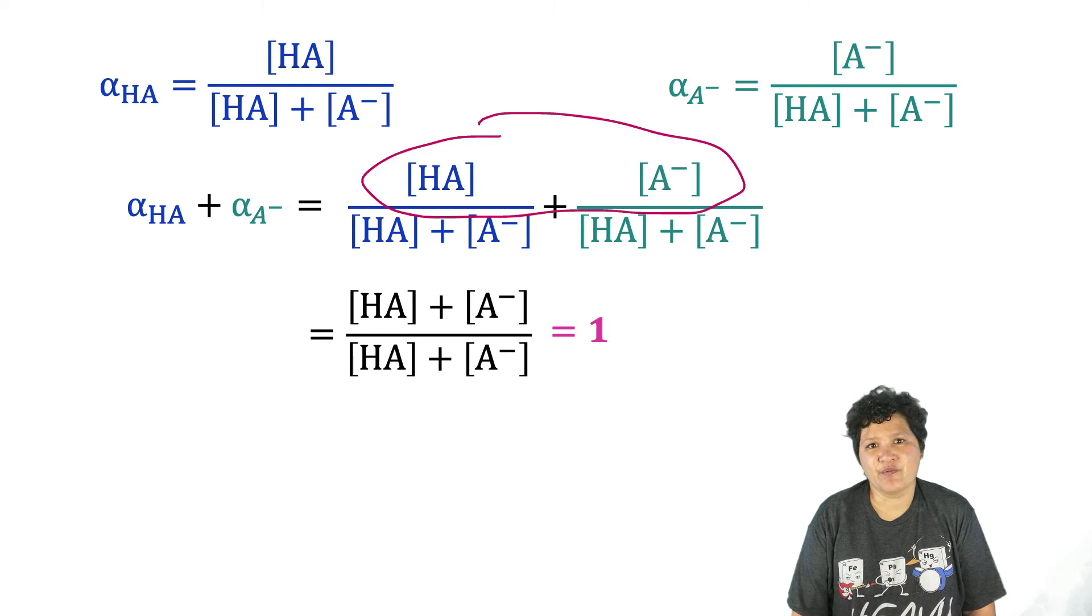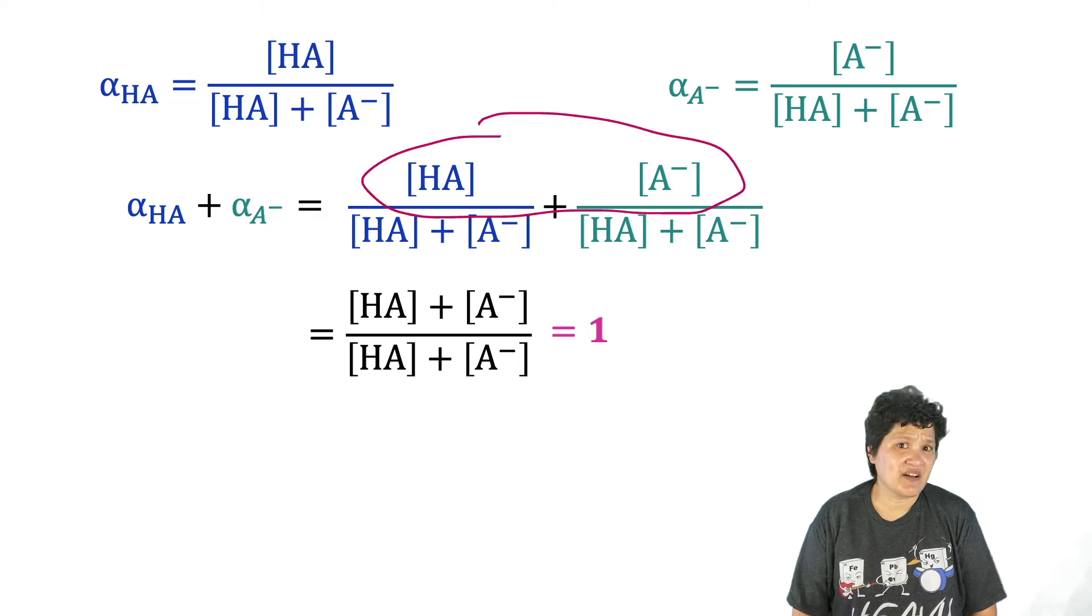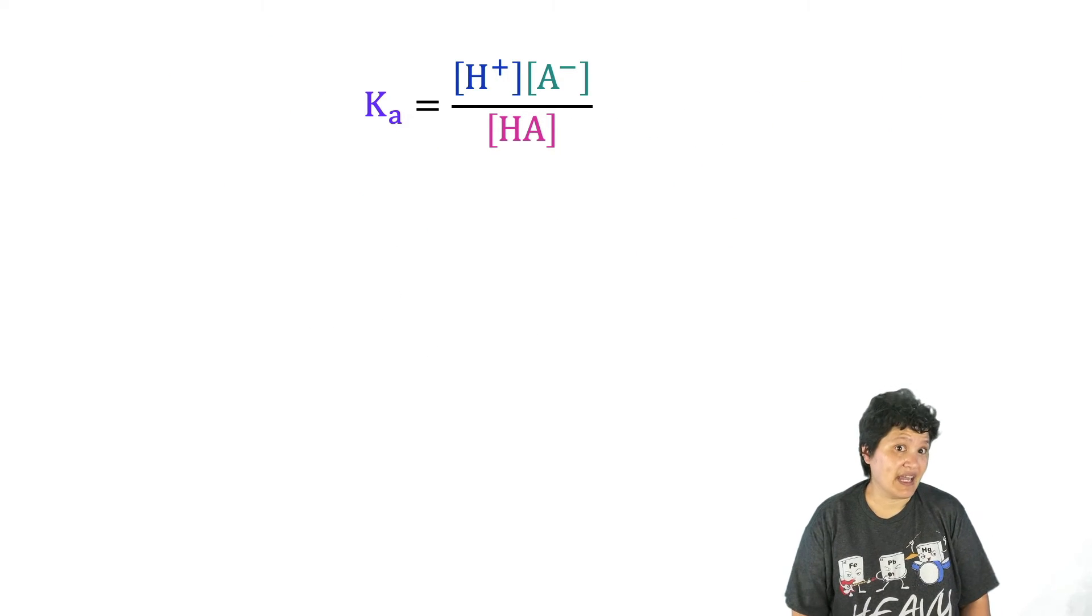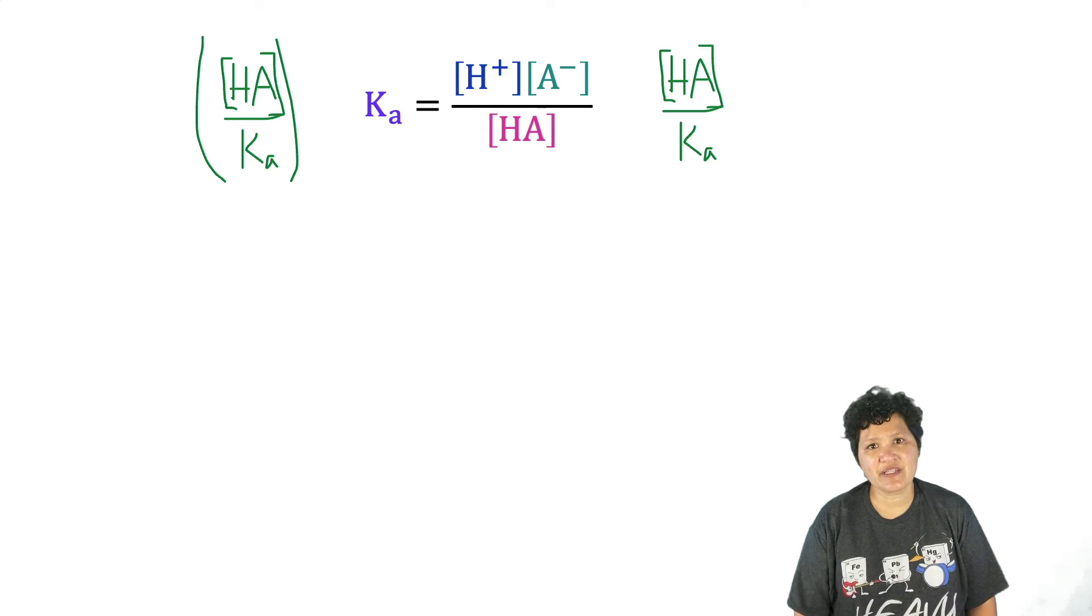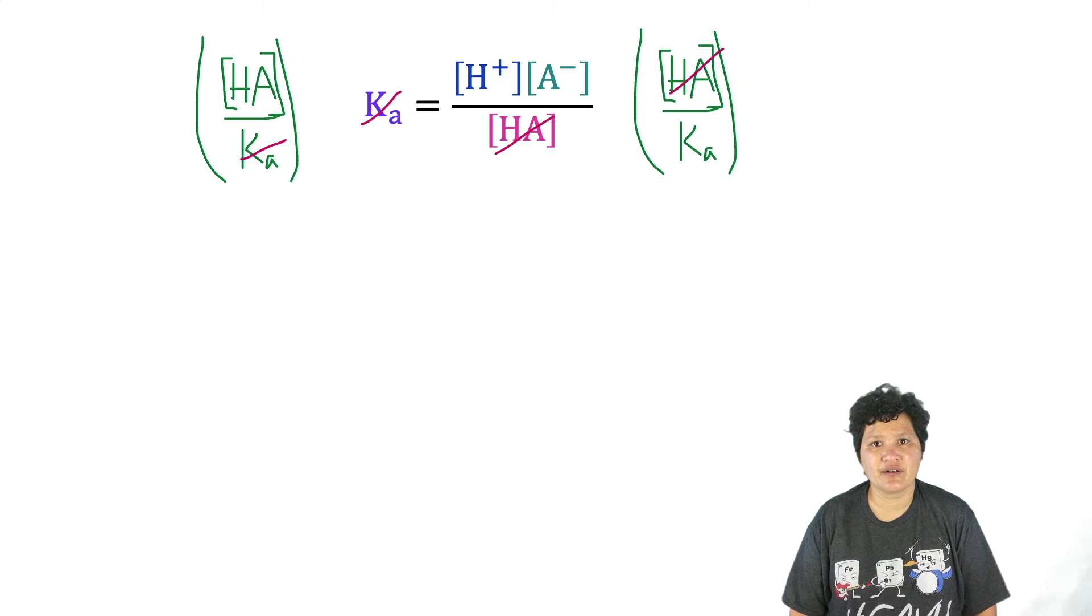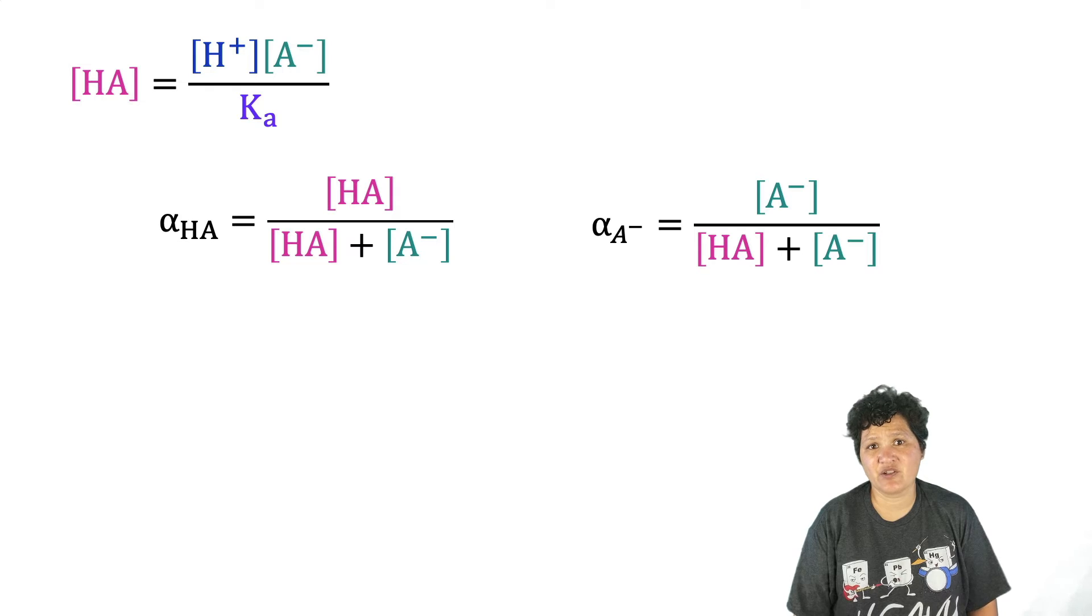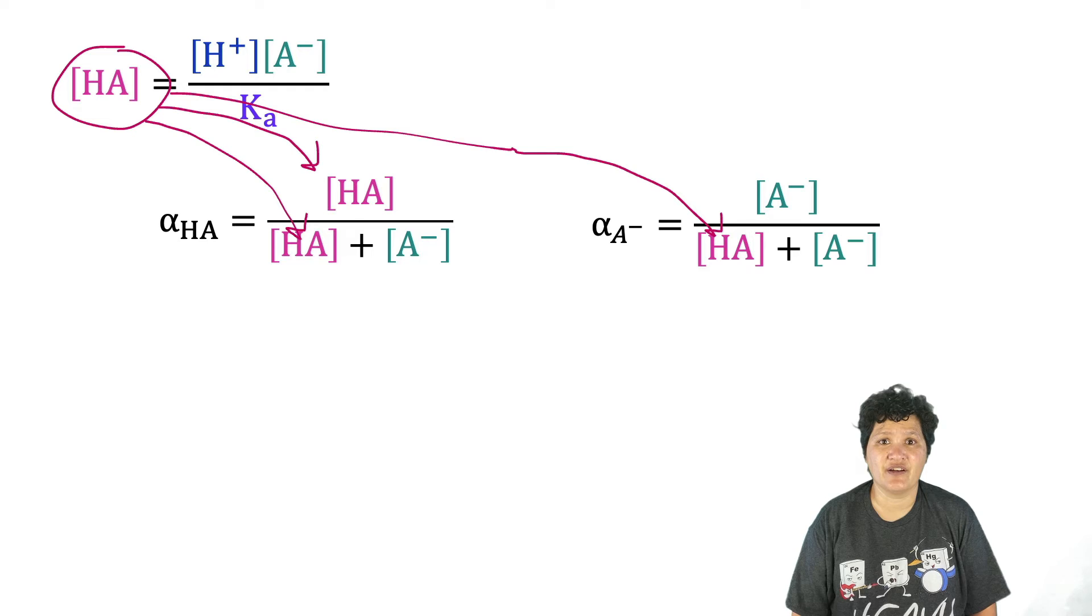But this doesn't help us with our problem, which is that we want to know how the fractional composition is dependent upon pH. Well, we do have an equation that relates the concentration of HA, the concentration of A-, and the H+ concentration. That's the equation for the acid dissociation constant, Ka. Let's take this equation and rearrange it so that we have HA on one side and everything else on the other. And now let's take the two equations we derived earlier and plug this expression in everywhere we see the concentration of HA.